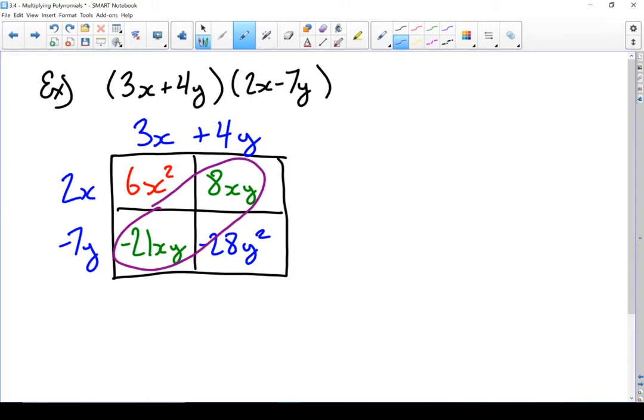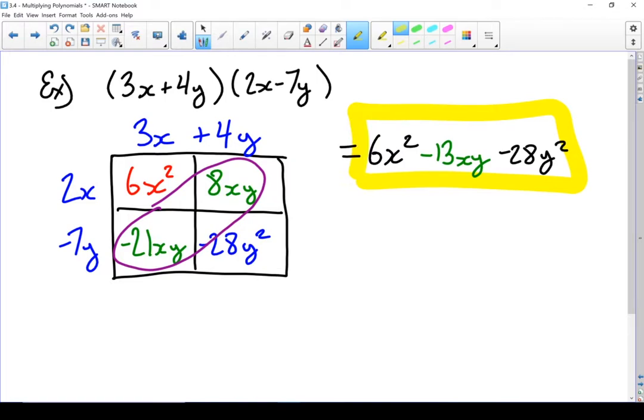I'm going to be putting those together. So I'm going to rewrite all of these terms from the box. Now 6x squared doesn't have any like terms, so I'll start with that one. Minus 21 and positive 8, those are both xys, so that is going to give me minus 13. Don't forget your x and your y. And then that last term is minus 28y squared. I just multiplied 2 binomials.